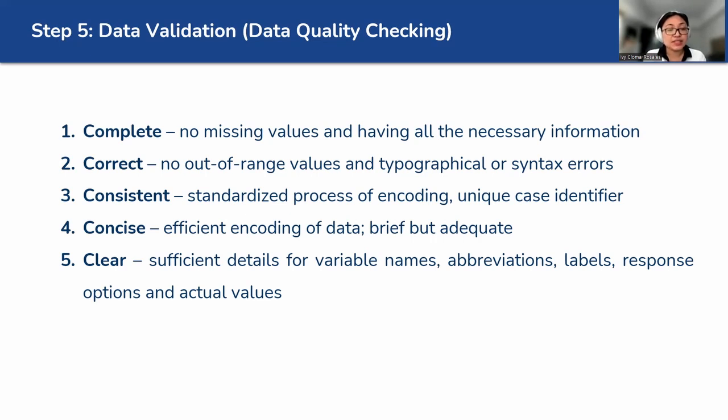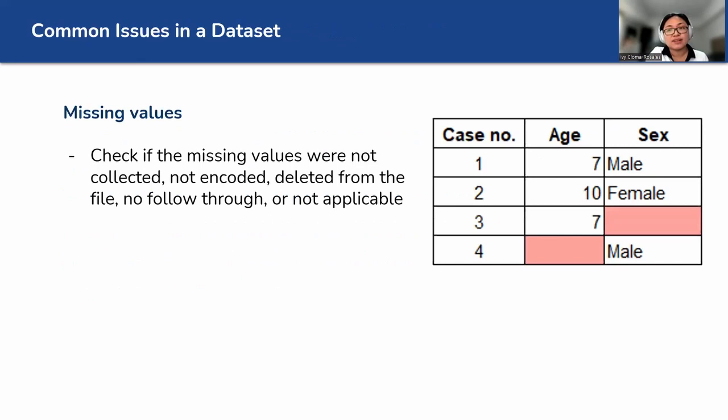Number four, concise meaning efficient encoding of data, brief but adequate. And then five is to be clear, sufficient details for variable names, abbreviations, labels, response options, and actual values. And let's look at examples.